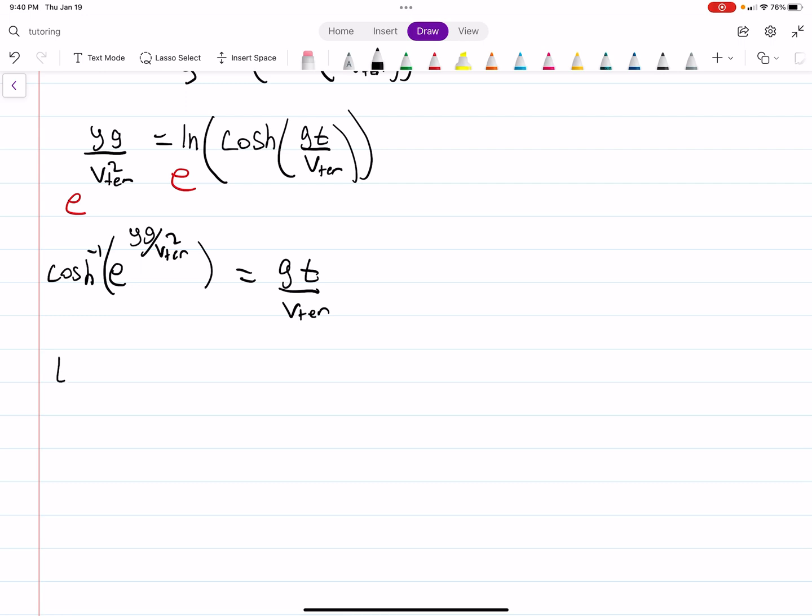Or just solving, T is equal to V terminal over G times cosine hyperbolic inverse of E to the YG over V terminal. Okay. So that is how you can find your time. And all of this is given. We know all of these values. So we can actually just go ahead and plug this in. And if you plug in these values, you should get about 2.78 seconds, which is just the time it takes to go that far.